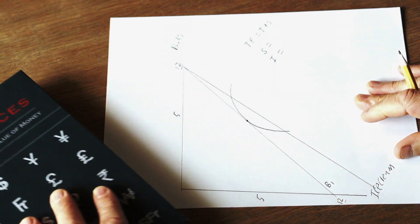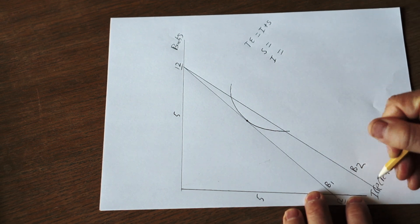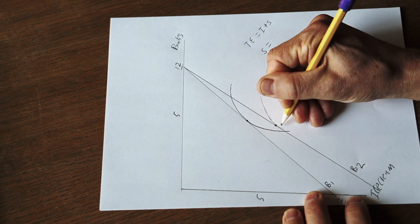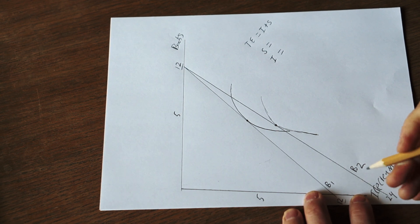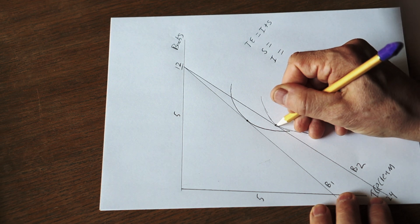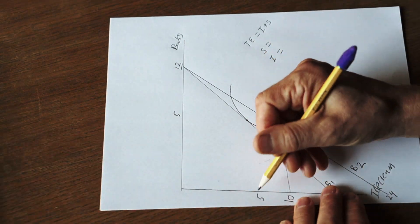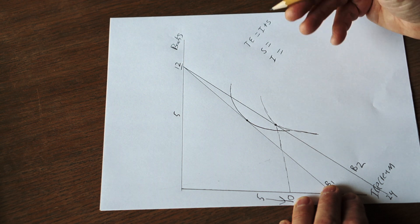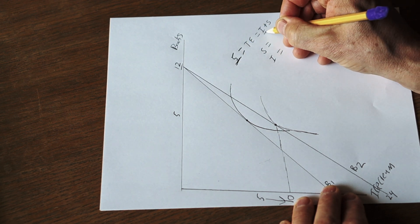We're going to draw a new budget constraint, B2. We're going to choose a new indifference curve. If you had a real sweet tooth, you could blow all your money and consume 24 units of ice cream at the new price. But in a normal sense, we're going to consume a little more — let's say 10 units for simplicity. So we go from 5 to 10 — an increase of 5 — because there's a relative drop in the price of ice cream. The total effect equals 5.